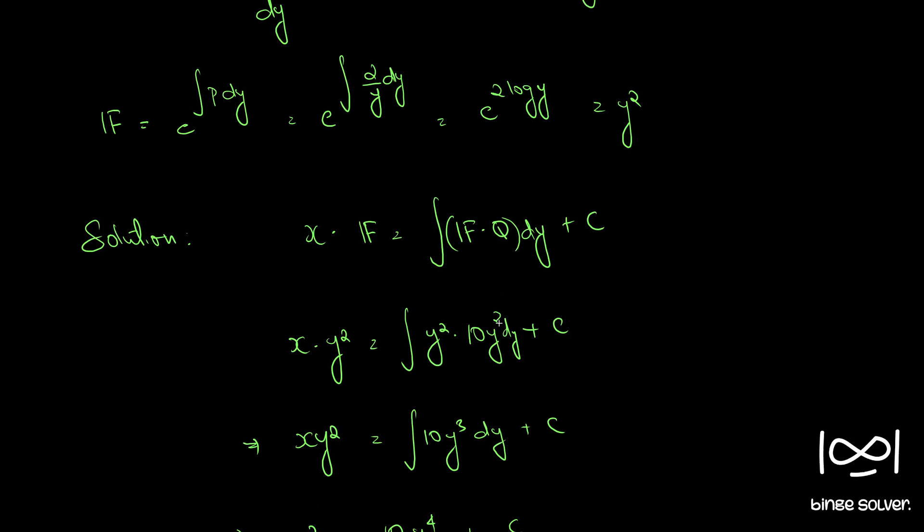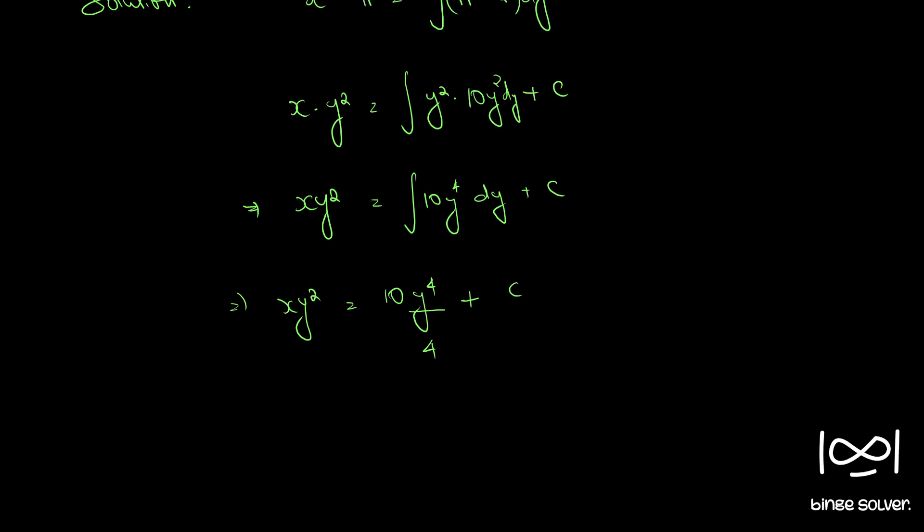We have 10y² here. We have 10y⁴, or the integral becomes 10y⁵/5. So our final answer becomes xy² = 2y⁵ + c.